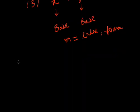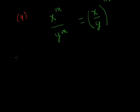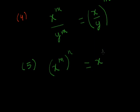Moving on to law number 4: when both bases having the same power are divided — different bases but the same power — this equals x upon y whole raised to the power m. Moving to law number 5: x raised to the power m, and this whole expression raised to the power n, equals x raised to the power m multiplied by n.